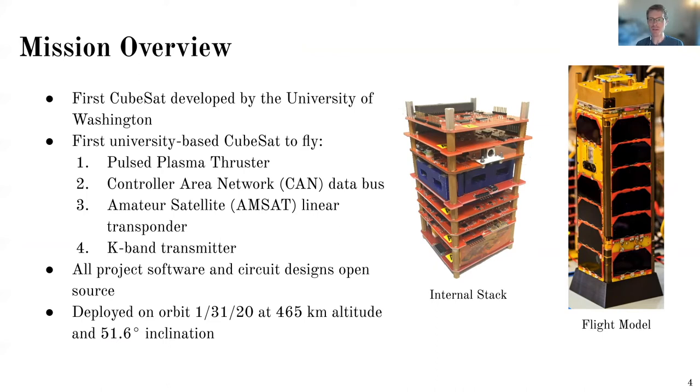And then additionally, there was a high frequency at 24 gigahertz transmitter system on board. You can actually see that in the picture here up on top. All the software and the circuit designs are completely open source, so links to those can actually be found at the end. So the Husky Sat was deployed initially on January 31, 2020. It operated under UW's control for about 90 days, and then it was handed over to AMSAT.